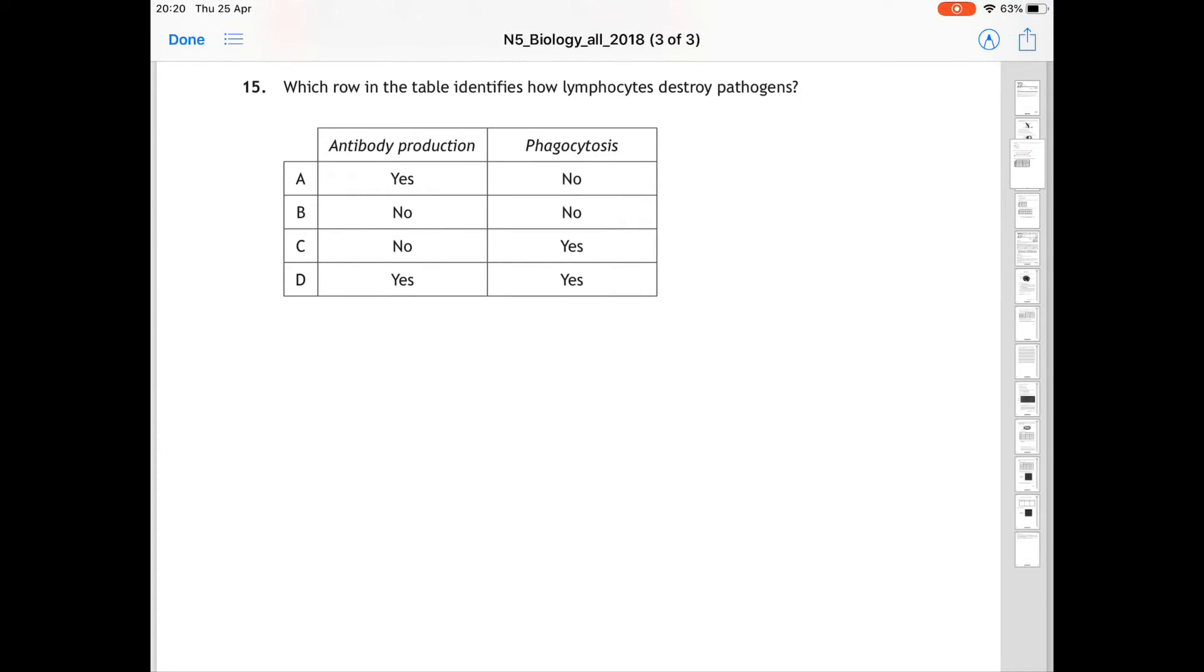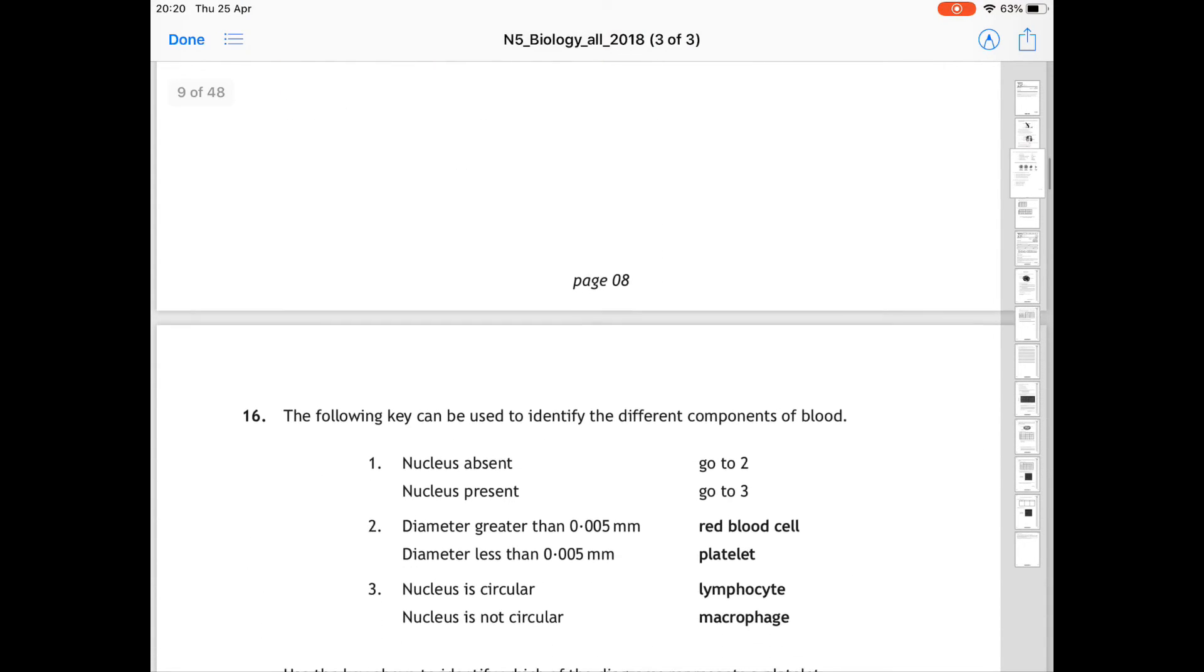In question 15, which row in the table identifies how lymphocytes destroy pathogens? Do they produce antibodies? Yes or no. And does phagocytosis take place? Yes or no. The easy part to break this down is lymphocytes are not phagocytes. So phagocytosis does not appear here. So it has to be no. So it's cut down to answers A or B. However, lymphocytes do produce antibodies in order to destroy pathogens. So it has to be A. Antibodies are produced, but phagocytosis does not take place. 15 is A.